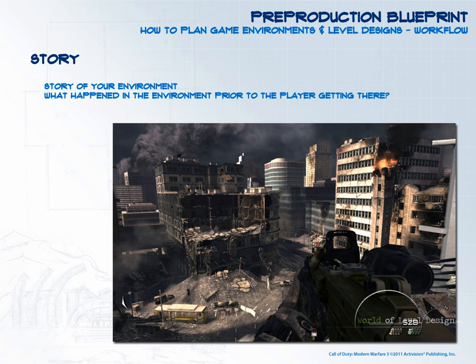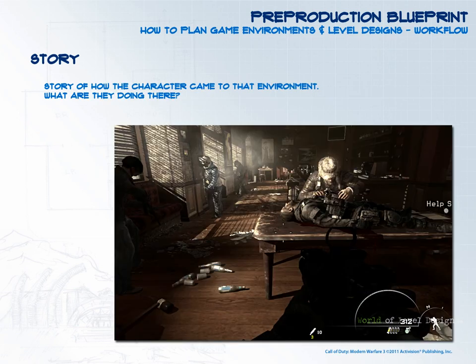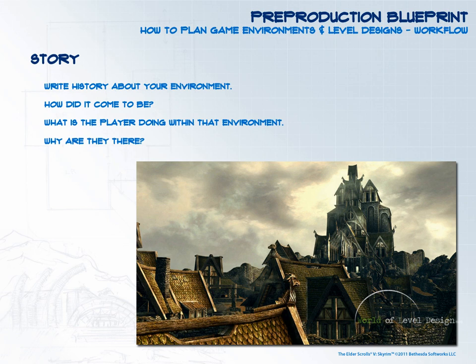Next, you want to create a story. There are two types of stories to focus on. The first is the story of your environment — what happened in the environment prior to the player getting there. The second is the story of how the character came to that environment — what is the player doing there? These two types of stories will help to define the purpose of your environment and help you place props, texture the environment, set up objectives, obstacles, and create set pieces. Write the history about your environment: how did it come to be, and why is the player there?